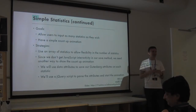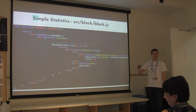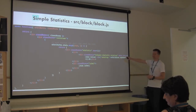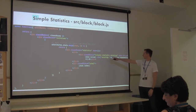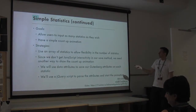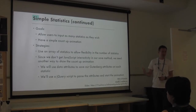Since we don't have JavaScript interactivity on the front end, all we're doing is passing in the stat value as a data attribute - otherwise we don't know what the count-up value is. On GitHub you can see I have that count-up JS. All it does is go through each element with a class name of 'simple-statistic-count-up', gets that value, and starts the count-up animation. Our strategy: we use an array to allow flexibility, and we use data attributes to save that count-up data so we can parse it on the front end with a jQuery script.